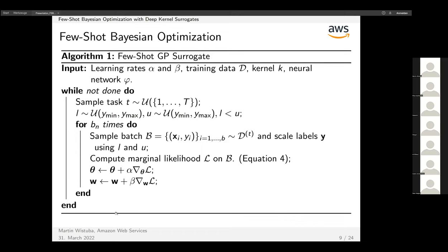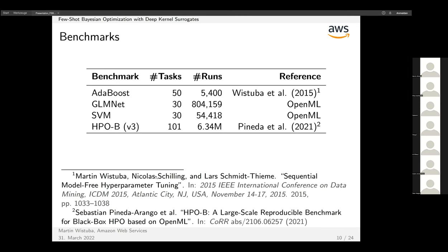This is how the overall algorithm looks like. This is mostly the meta-training algorithm plus the task augmentation. You sample some tasks, sample new low and upper thresholds for task augmentation, then for bn times sample batches, do task augmentation, compute the marginal likelihood, and update your kernel parameters.